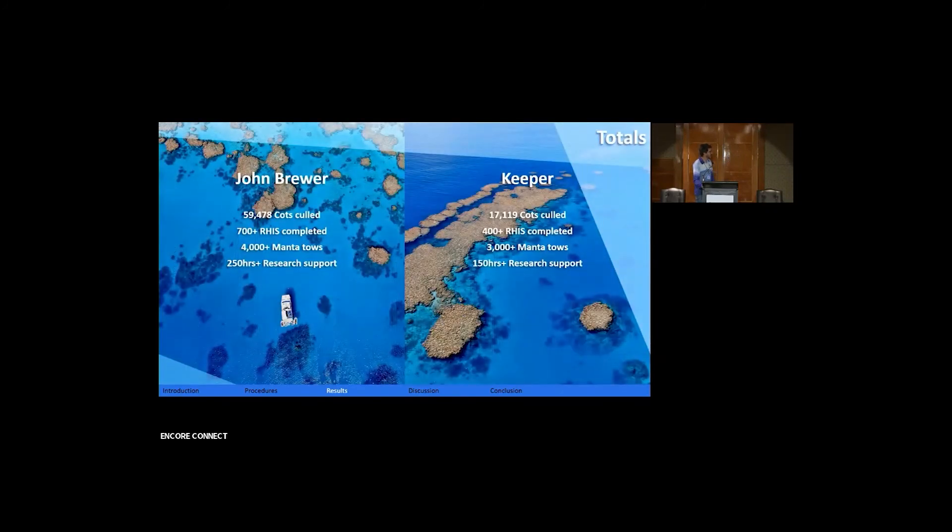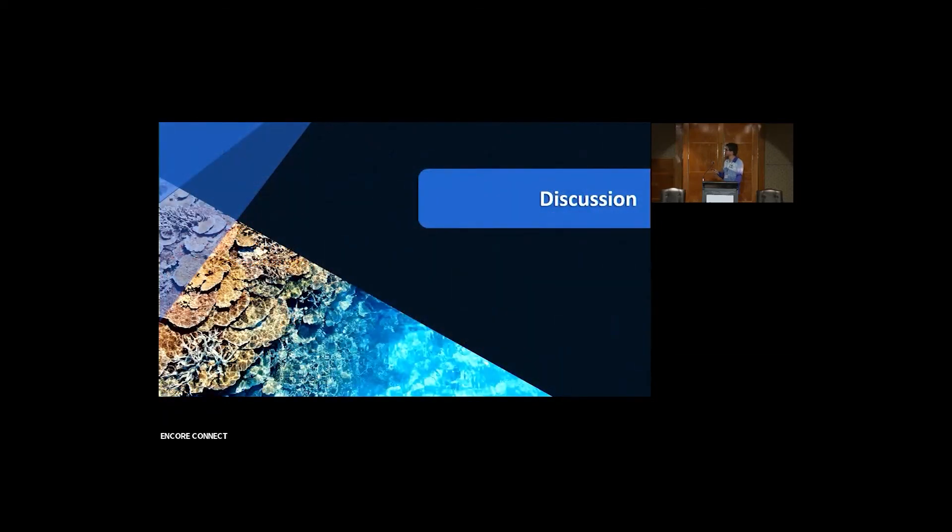So just to summarize again what we've done across these two reefs. In total, if you add up all the COTS that we've culled across these two reefs across both years, it's nearing on 80,000 COTS now. It's a lot of COTS, to be honest, but we're getting there.